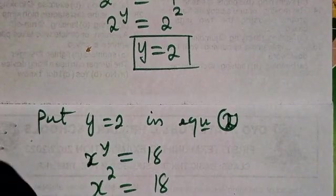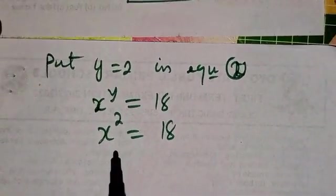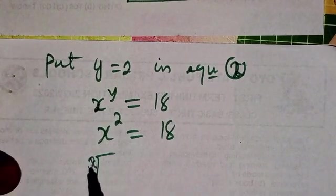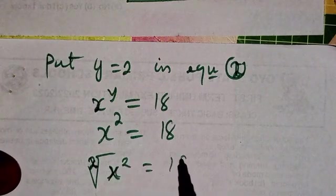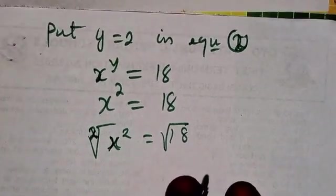Now what do we do? We want to get rid of the square because we are looking for x. So x to power 2 equals the square root of 18.